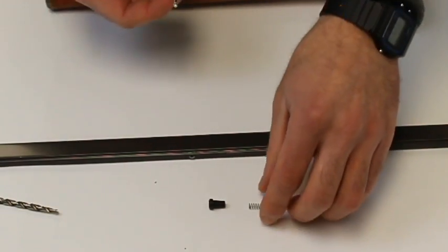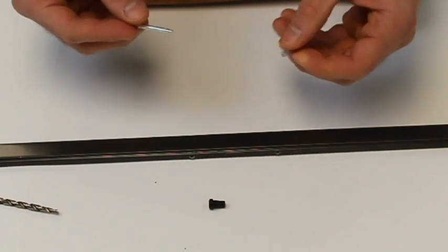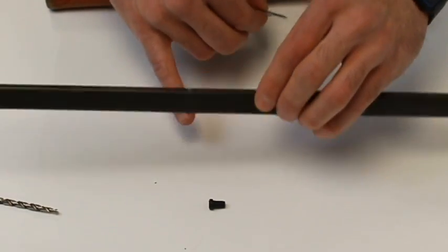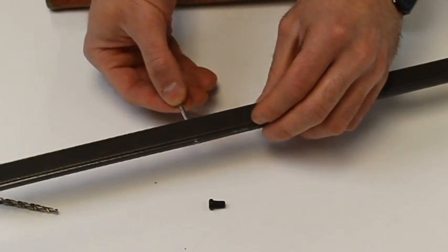So to install the screen pin, take the spring that comes with the pin, put it on the top, and from the outside of the frame to the inside, you will insert the pin.